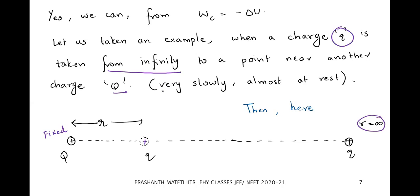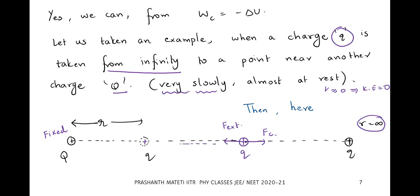We move the charge very slowly so that velocity is approximately zero and kinetic energy is approximately zero. At any instant, the charge experiences a repulsive force. To prevent acceleration but still cause movement, we apply an external force equal in magnitude to the Coulomb force but opposite in direction, so they cancel and acceleration remains zero.